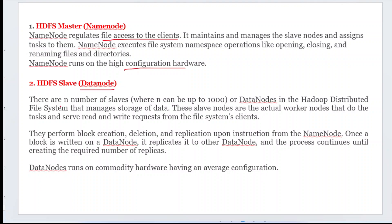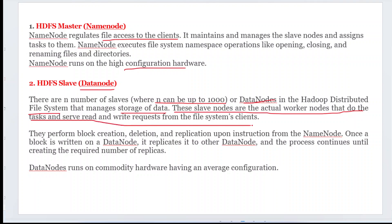HDFS slave nodes are also called data nodes. There can be N number of slave nodes — up to a thousand nodes or data nodes — in the Hadoop Distributed File System. These slave nodes manage the storage of the data. They are the actual worker nodes that perform tasks and handle read and write requests from the file client systems. You can extend your data nodes up to nearly a thousand machines.